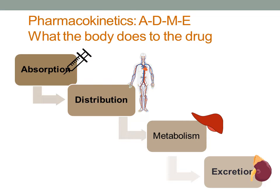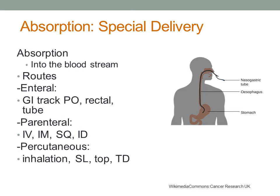When a medication is ingested, applied, or injected, it enters the bloodstream — this is absorption. The second phase is distribution, which is the delivery of a medication to the target site after it's gotten into the bloodstream. For example, you take a pill and it goes into the stomach or intestine and then into the bloodstream.